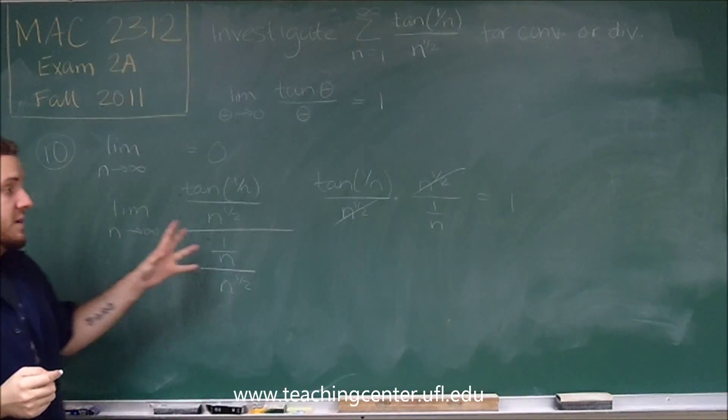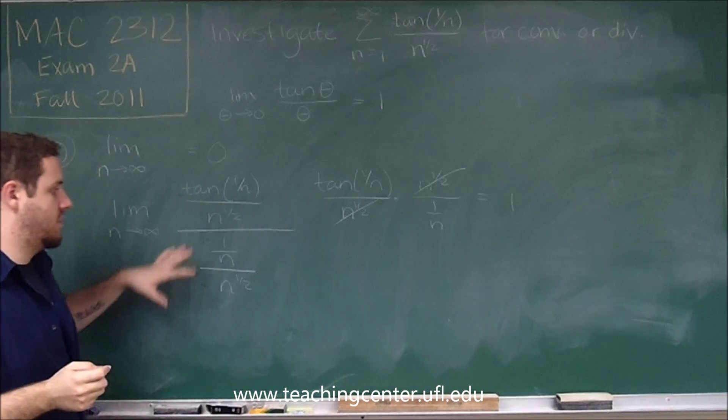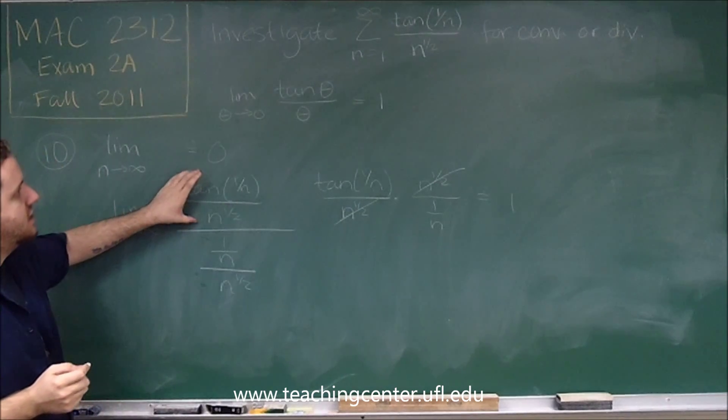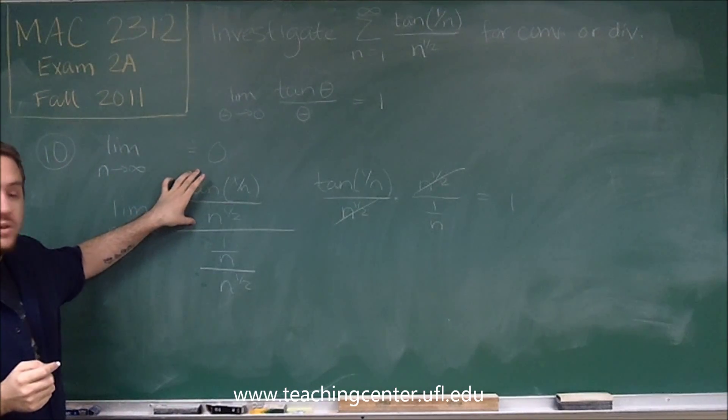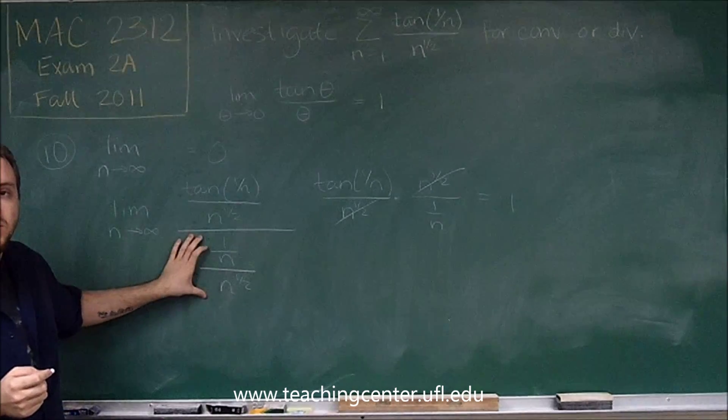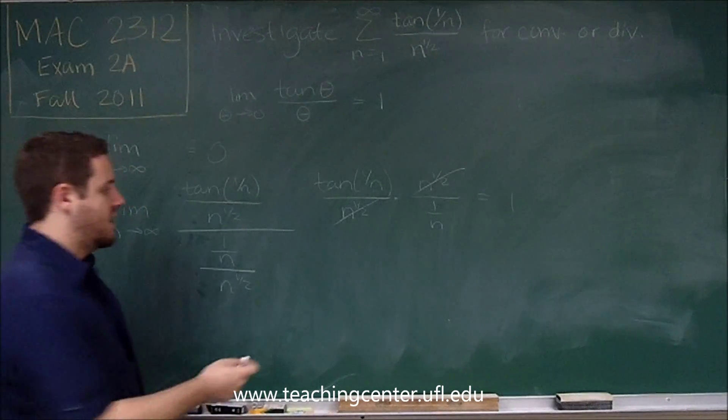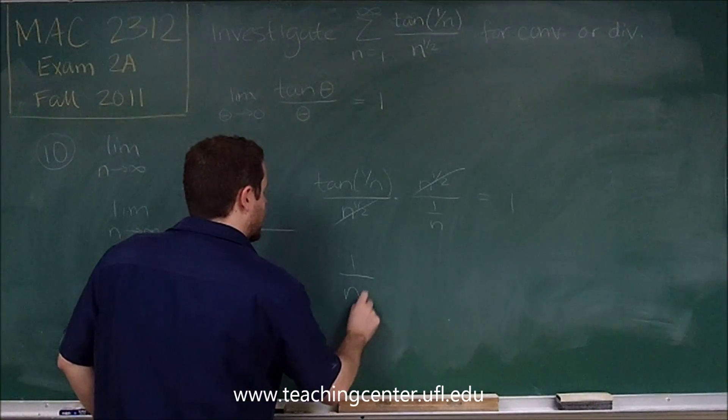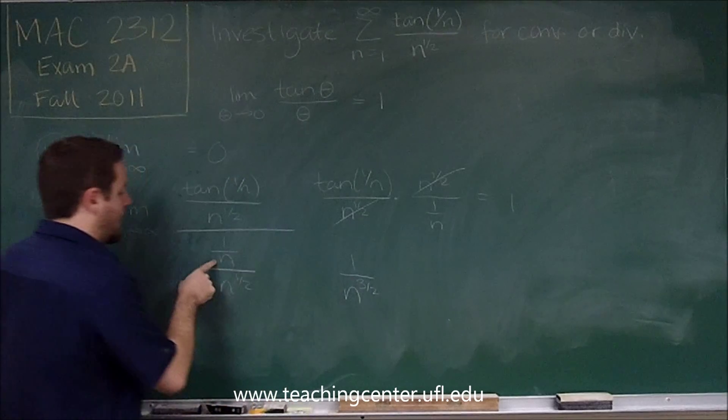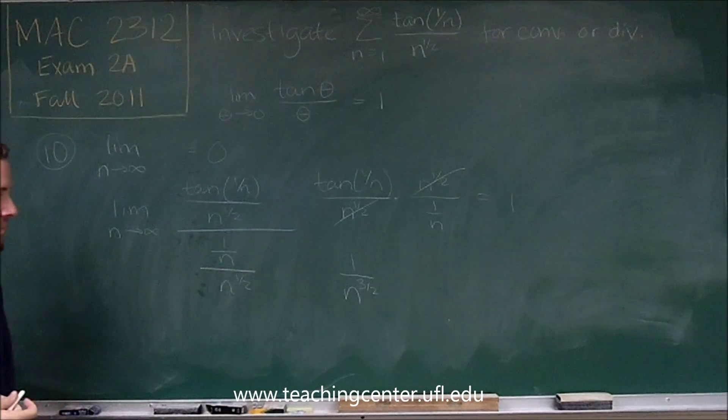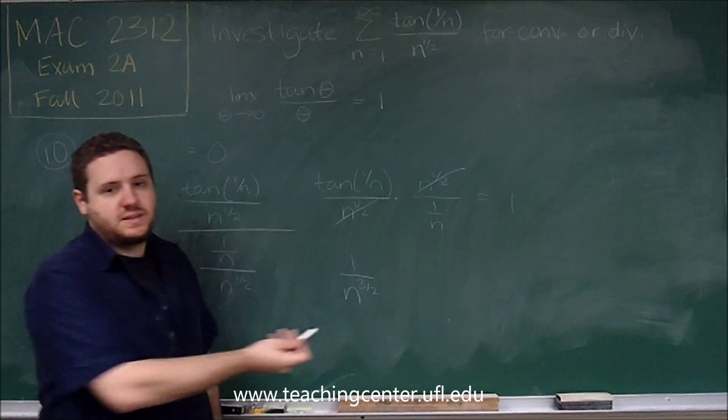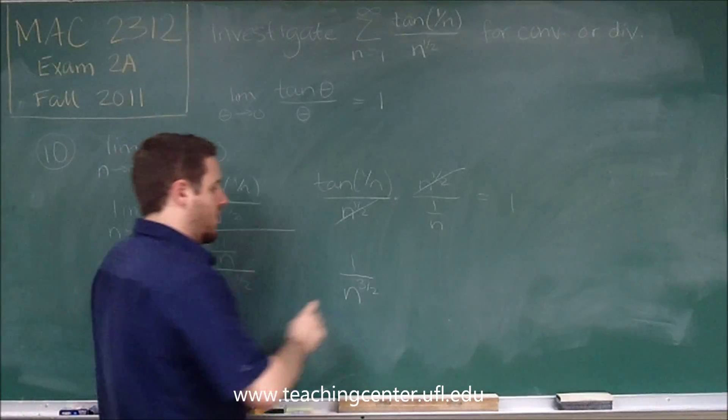Since this 1 is a positive finite number and we use the limit comparison test, that means our function here has the same convergence of this function. So let's just figure out what this one is. 1 over n over n to the 1 half is just 1 over n to the 3 halves because really this n is on this denominator. And by p-series this converges because 3 halves is greater than 1.